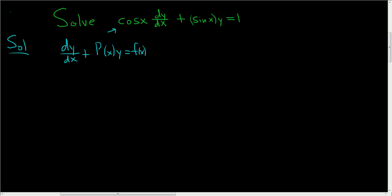So in order to do that, we'll divide everything by cosine x. So we'll divide this by cosine x, we'll divide this by cosine x, and we'll divide this by cosine x. So we end up with dy/dx, and then plus sine x over cosine x is simply the tangent of x.